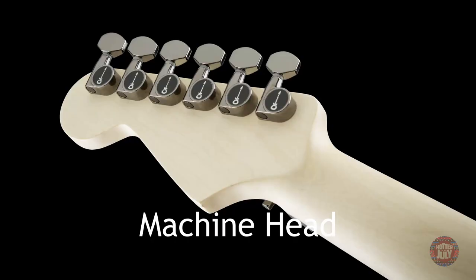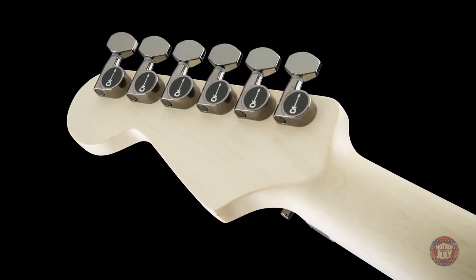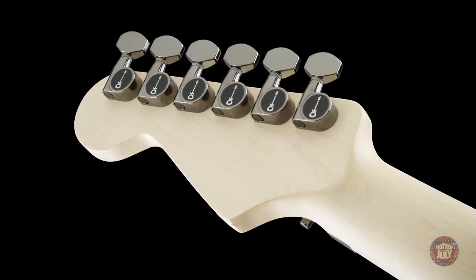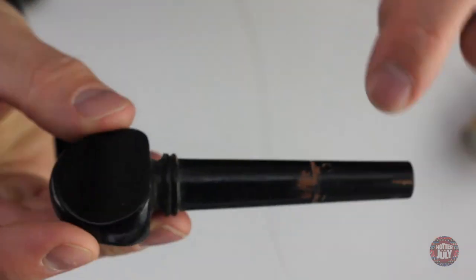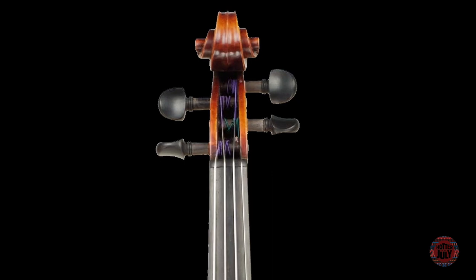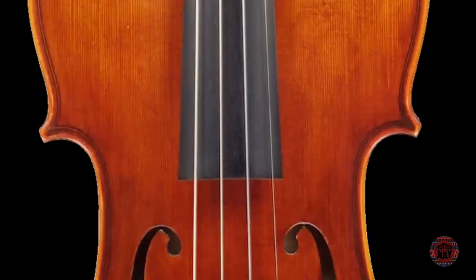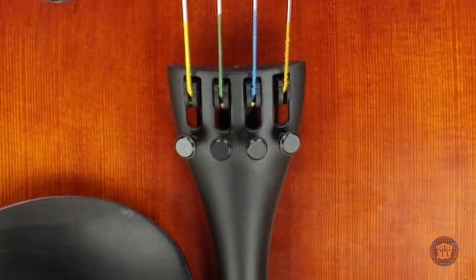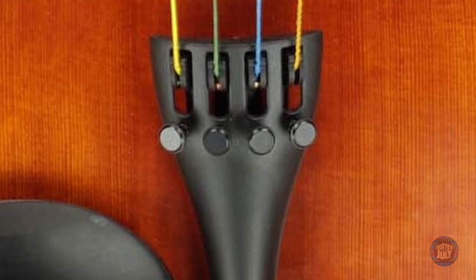Machine heads, as found on guitars, are a more convenient way of doing this, but take up more space. Tapered pegs, such as found on violins, use friction to stay in place, but are hard to fine tune, which is why violin family instruments have dedicated fine tuners, which are a type of screw that exerts downward pressure on the string to increase or decrease tension.